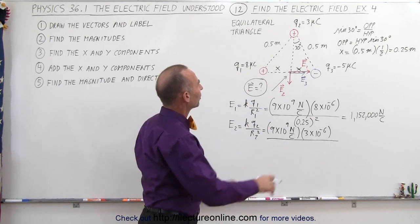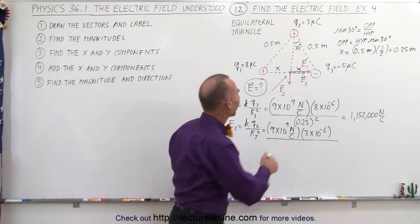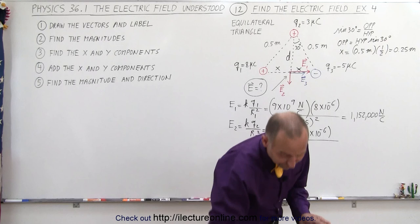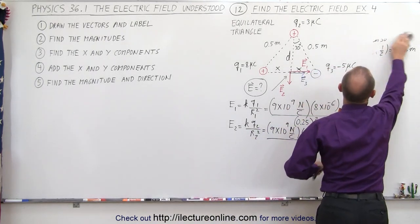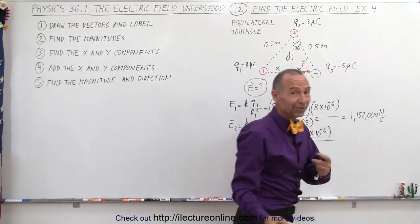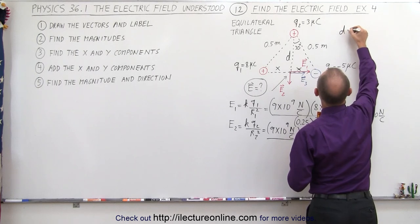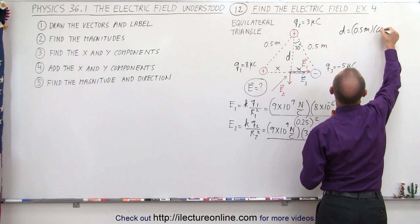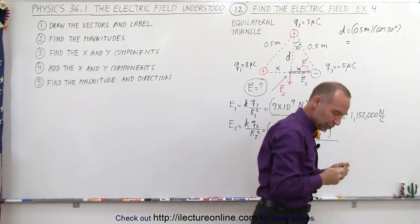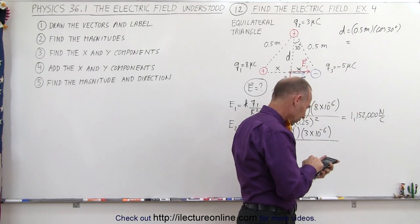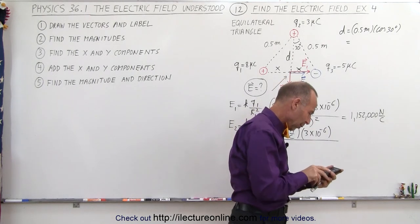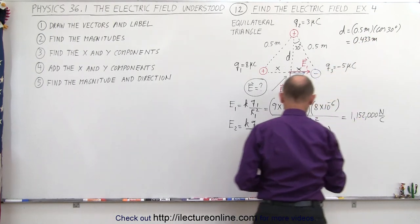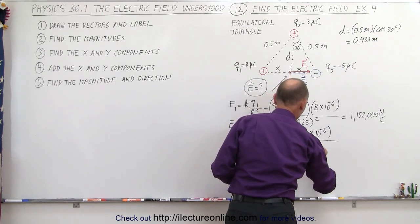Something doesn't seem right — I'm not looking for the opposite side, I'm looking for the adjacent side, this distance here. Let's call it d. So instead of sine I need the cosine. That happens when you don't pay attention. Let's try this again: d = 0.5 meters × cos(30°), which equals 0.433 meters. So 0.433 meters is the distance that goes into our calculation.